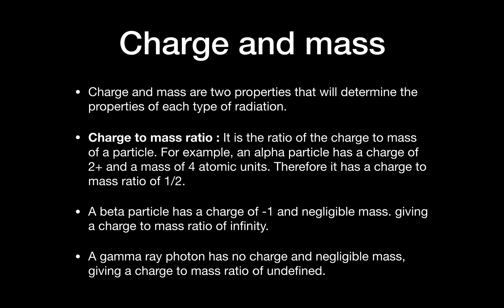So we first have to look at charge and mass. Charge and mass are two inherent properties of all these three particles and they will help determine how they behave in all of these situations. Charge to mass ratio is an important quantity that we often use. It is the ratio of the charge to the mass. For example, an alpha particle has a charge of plus 2 and a mass of 4 atomic units, therefore it has a charge to mass ratio of 1/2.